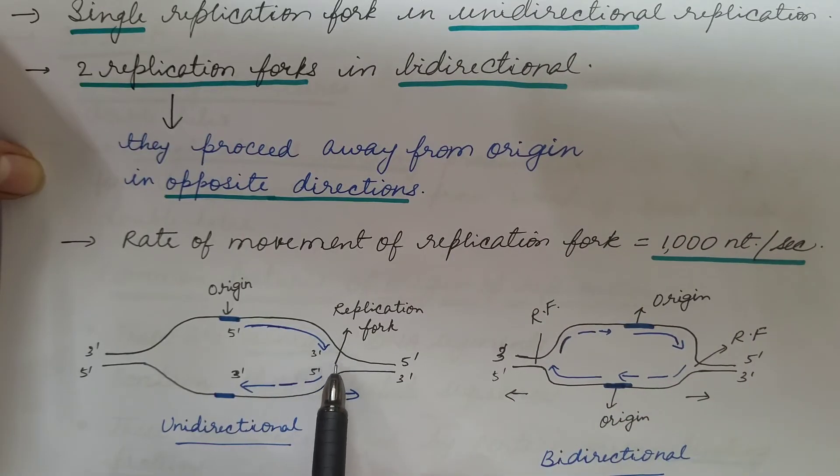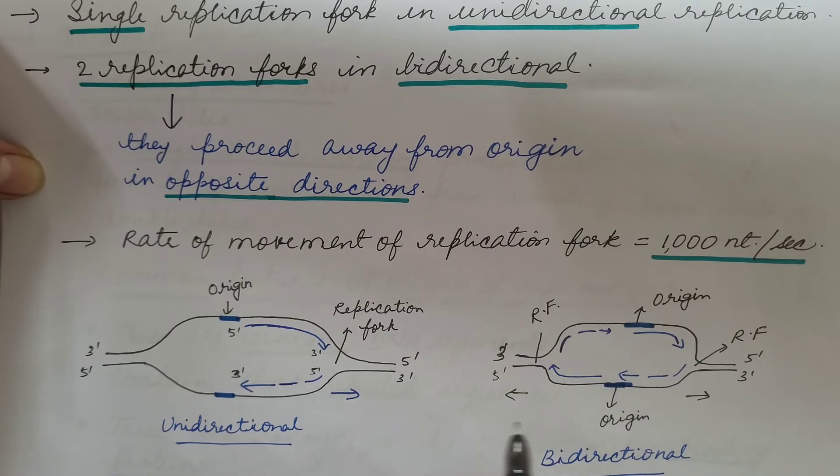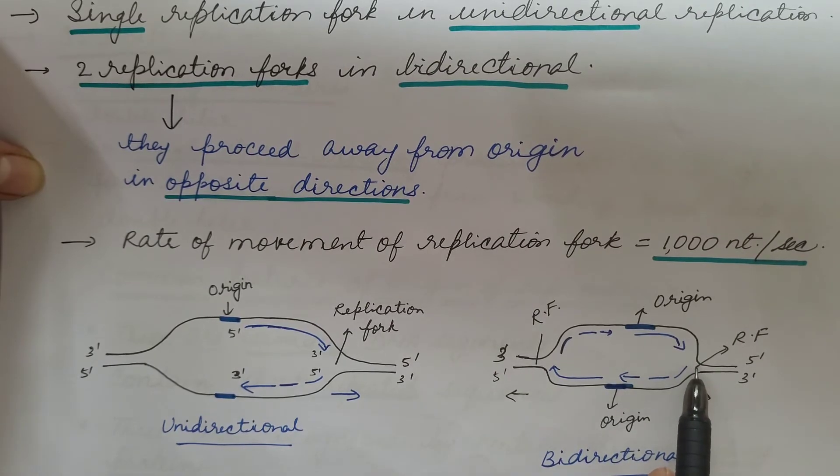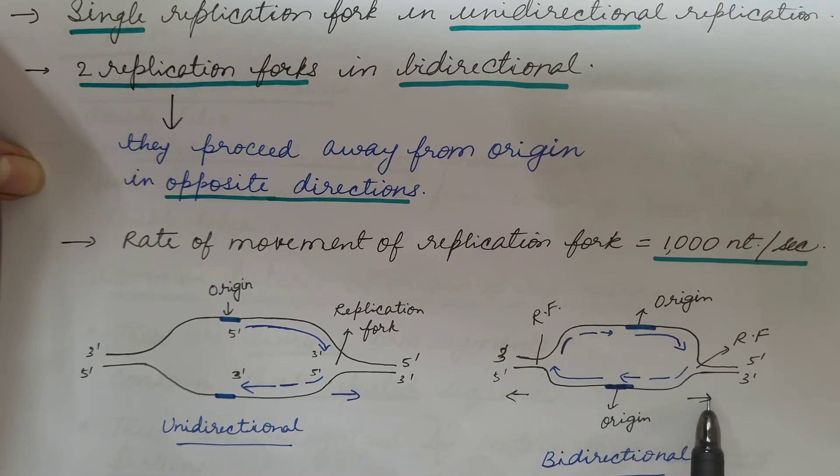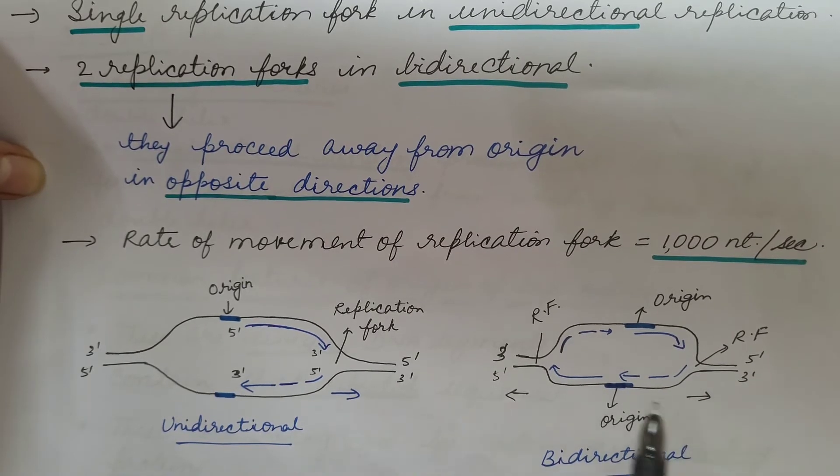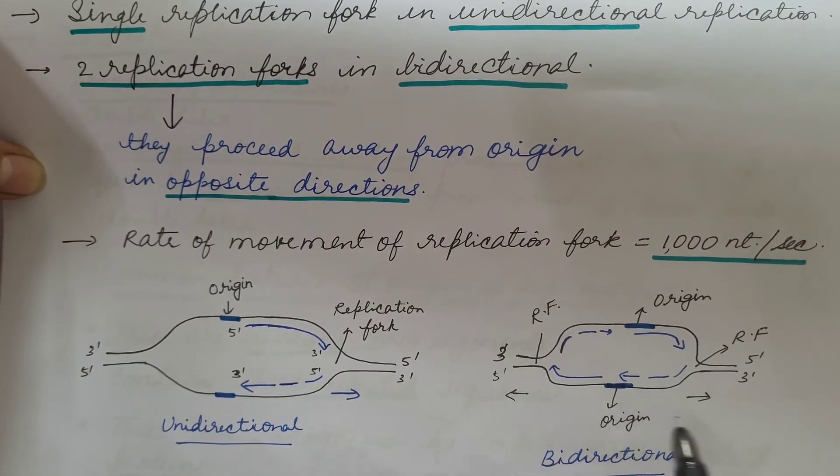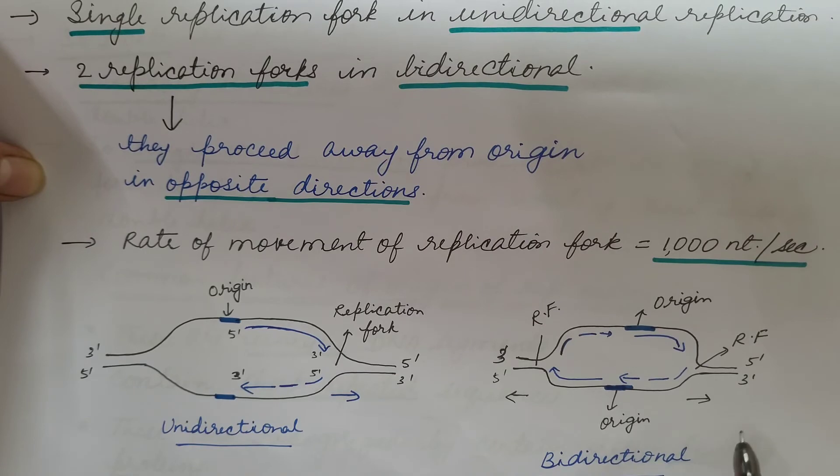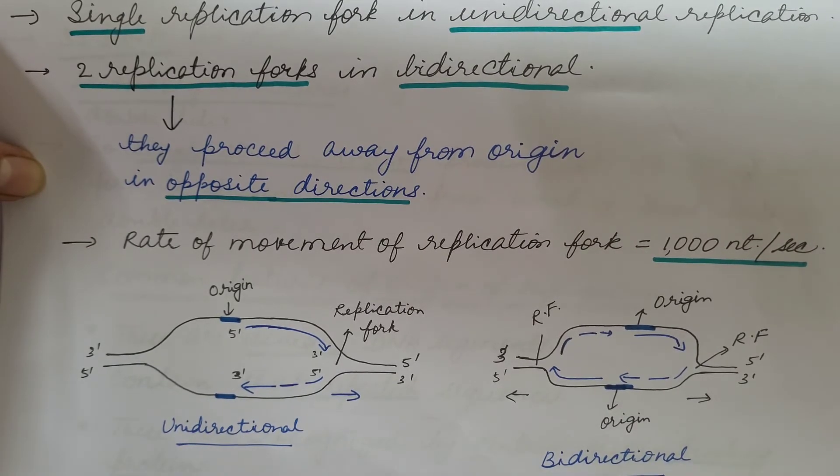So here, this is the replication fork and the replication proceeds in only one direction. Here there are two replication fork, one and two. This replication fork moves in this direction or the replication proceeds in this direction and here the replication proceeds in this direction. That is, these are opposite of each other. These moves in opposite direction. This is bidirectional mode of replication.